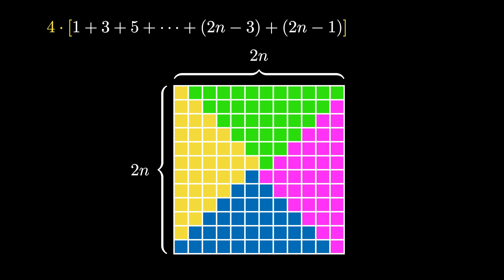The area of the resulting 2n by 2n square is just 2n times 2n, which simplifies to 4 times n squared.